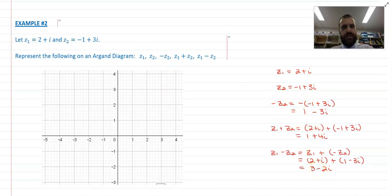So the first one is two plus i, so that's easy enough. The next one is z2, which is negative one plus three i.